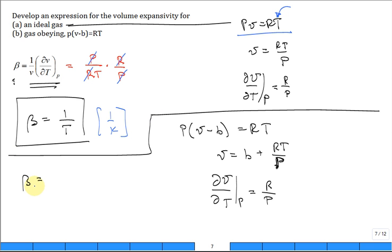In this case, beta is equal to 1 over V, 1 over B plus RT over P times R over P. And you could simplify it a little bit, but it's really not going to simplify much.